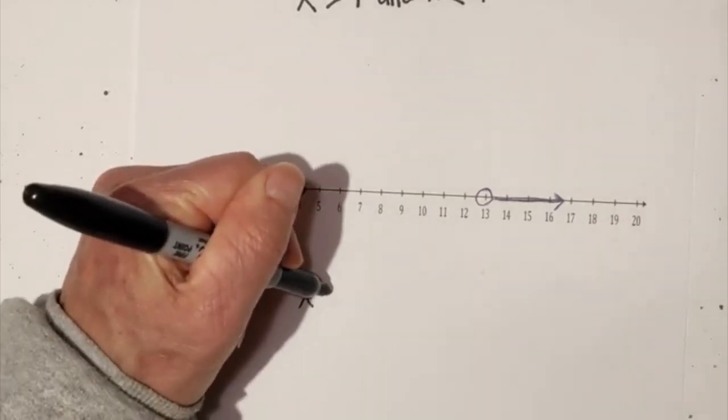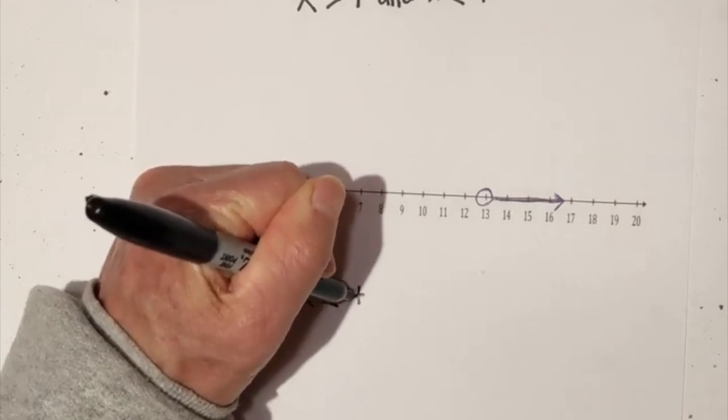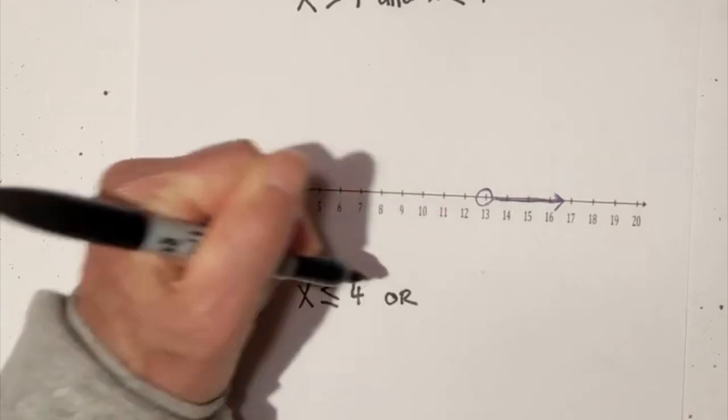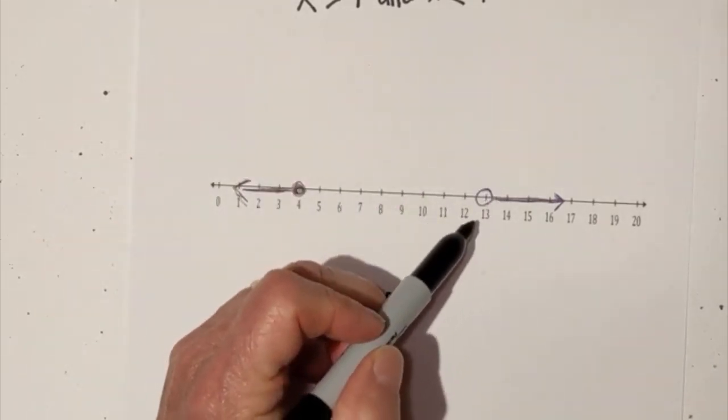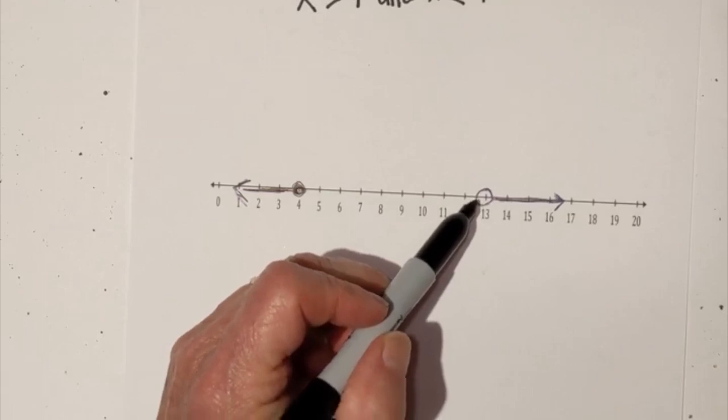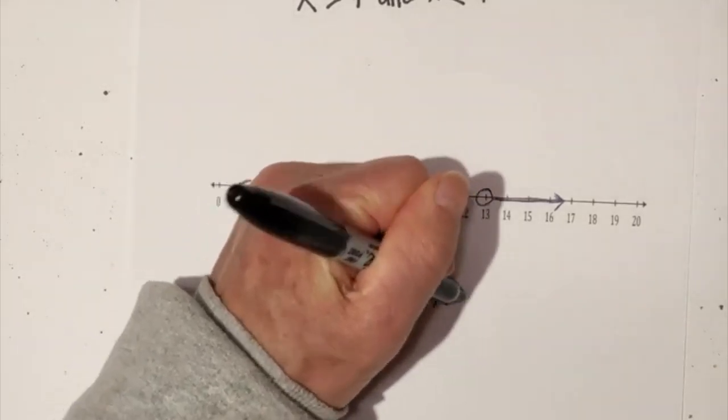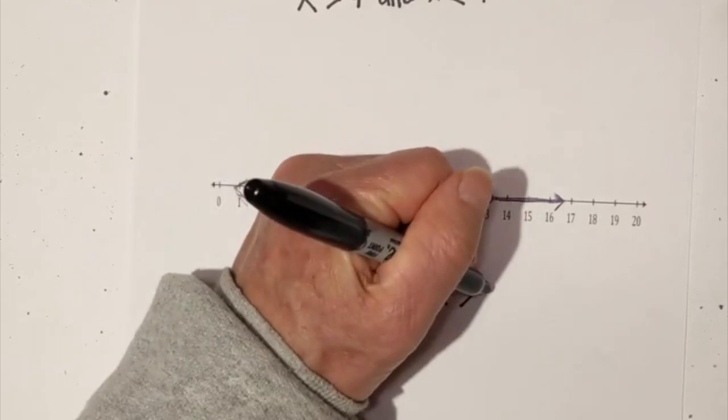So x is going to be less than or equal to 4 or it's a circle. So it's going to be greater than. So it's going to be x is greater than 13.